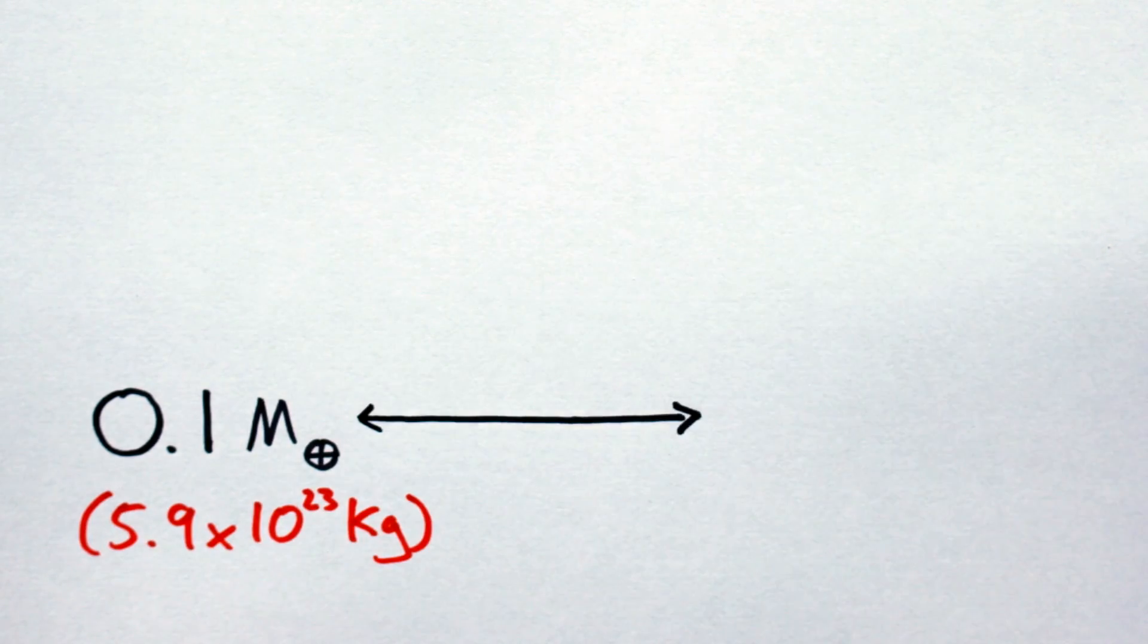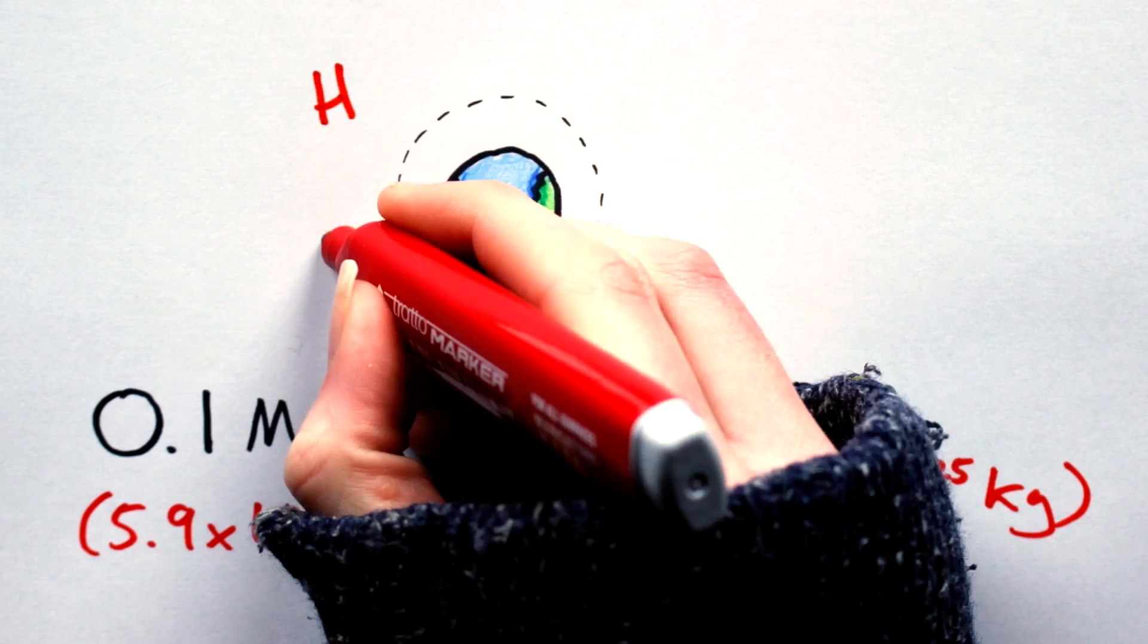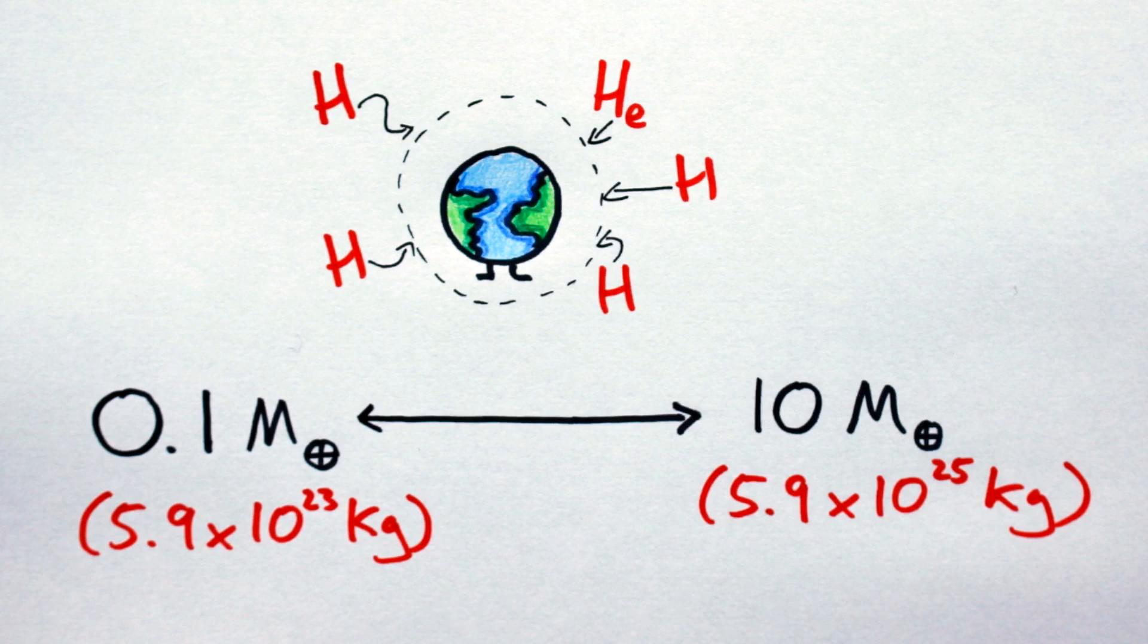Terrestrial planets then have a mass between 0.1 and 10 Earth masses. The range stops at about the 10 mark because at this point an object would be of sufficient mass to begin accreting a thick gaseous envelope, thus transitioning from a terrestrial world to a gaseous world.